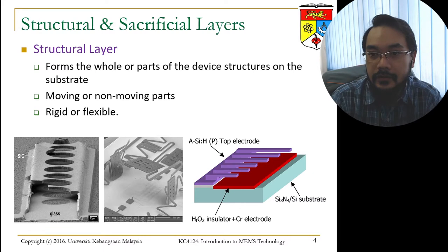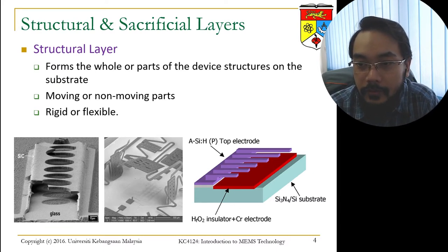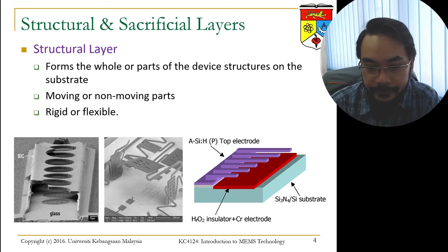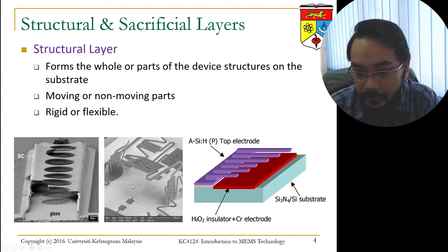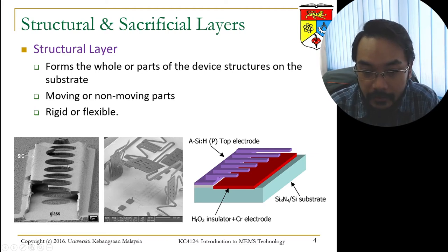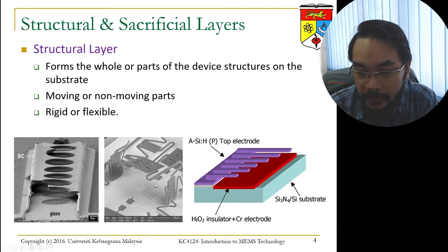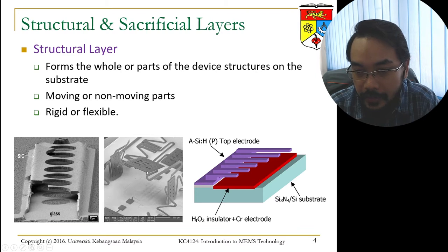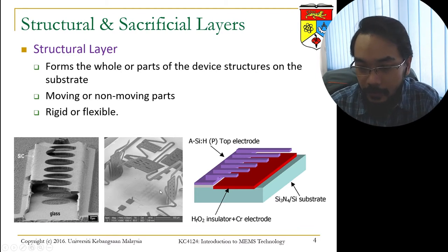Structural layers form the whole or parts of the device structure on a substrate. They can be moving or non-moving parts and can be rigid or flexible. Looking at the examples shown: on the left-hand side, you have a glass substrate with silicon carbide on top forming a rigid structure — the silicon carbide is the structural layer. In the middle, there are pop-up structures where the structural layers are rigid but also flexible at certain parts to enable movement and function as a MEMS device.